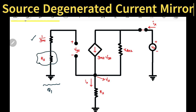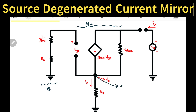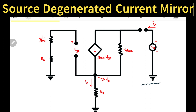In the NMOS current mirror we get the answer only as 1/GM1, because there this particular RS is not present, but in source degenerated current mirror this RS gets added up, and the leftover part is for Q2. If you observe, the particular VS is connected to ground in the simple mirror because source is connected to ground, but here at the source one extra component is present, so that is the reason RS is there. We will make use of some external supply voltage and analyze to calculate the output impedance.